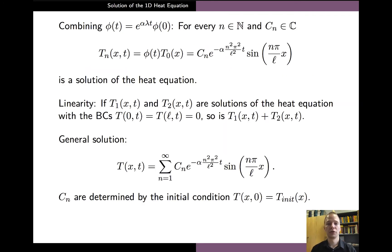Combining this formula with the solution phi of the first differential equation, we see that their product — involving an exponential term and a sine function times constant c_n — is a solution of the full heat equation. The linearity of the equation implies that any linear combination of solutions is also a solution. Therefore, all sums of the functions t_n for different values of n are also solutions. The general solution of the PDE is given by an infinite sum of such terms over all values of n, with suitable constants c_n.